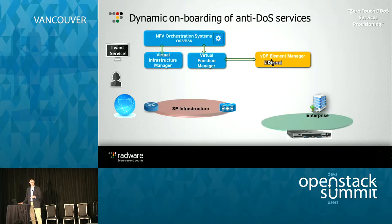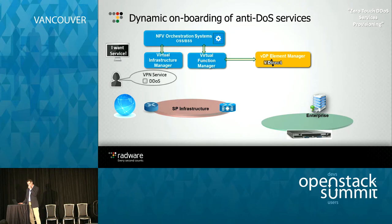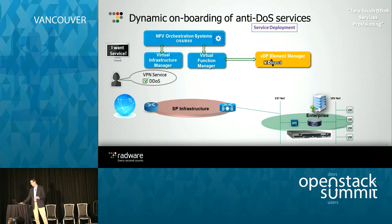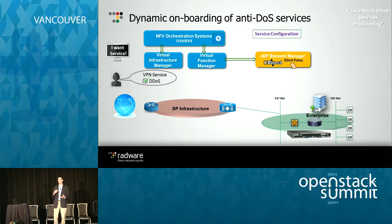Here's a specific example of a carrier running an NFV-based orchestration system wanting to offer a DDoS-based security service. The customer wants this service, so first I use the virtual infrastructure manager and set up all the virtual instances on-prem using OpenStack. Then I deploy the service configuration — using our vDirect plugin, which programs the VM sitting on the customer premise and sets up the virtual instance for the security element.